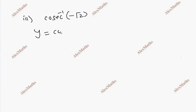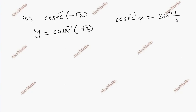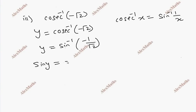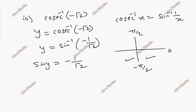Third subdivision: cosec inverse minus root 2. Let y equal to cosec inverse minus root 2. Using the formula, cosec inverse x equals sin inverse 1 by x, this becomes sin inverse minus 1 by root 2. So sin y equals minus 1 by root 2. Sin is negative in the third and fourth quadrant, but the principal value range is minus pi by 2 to pi by 2.